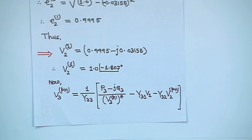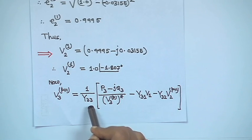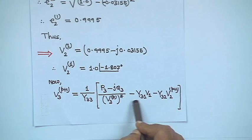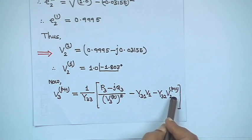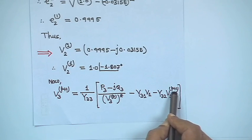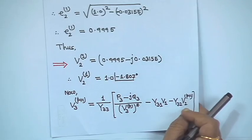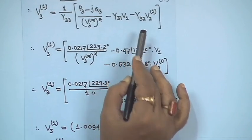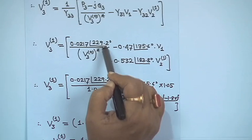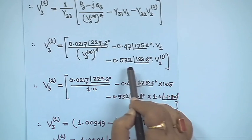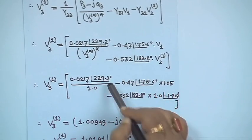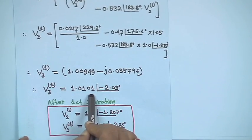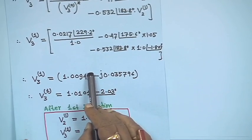Bus 3 is a PQ bus, so the same standard equation applies: V₃^(p+1) = (1/Y₃₃)·[(P₃ − jQ₃)/V₃^(p)* − Y₃₁V₁ − Y₃₂V₂^(p+1)], using V₂^(p+1) already computed. With p = 0 and all initial values substituted, V₃¹ = 1.0101 angle minus 2.03 degrees. Since bus 3 is a PQ bus, no correction is needed — this result is accepted directly.